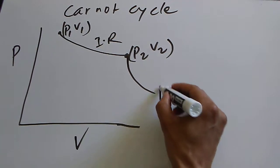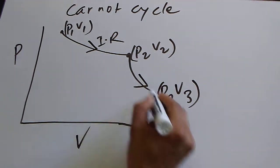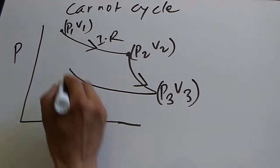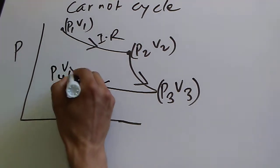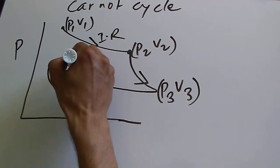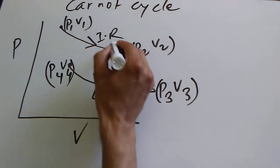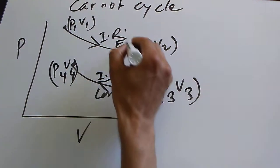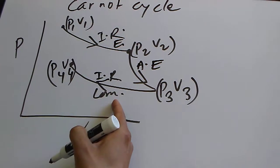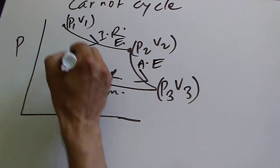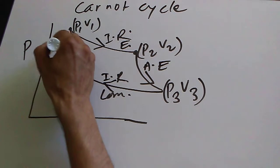Then we allow the gas to expand adiabatically and reversibly, and the pressure and volume become P3 and V3. Then we compress this gas by applying some electricity, and the final pressure and volume are P4 and V4. Then we further compress this gas adiabatically and reversibly.